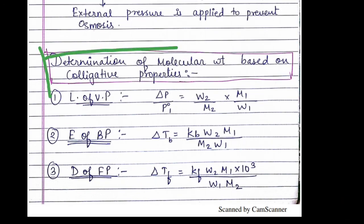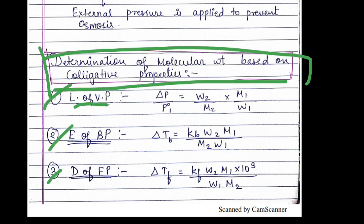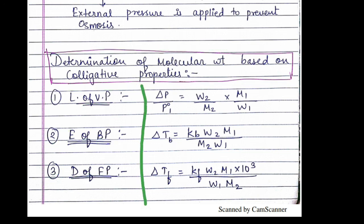For determination of the molecular weight based on the colligative properties, there are three methods: lowering of vapor pressure, elevation of boiling point, depression of freezing point. These are the equations by which we can calculate the molecular weight of a compound.